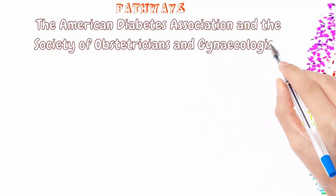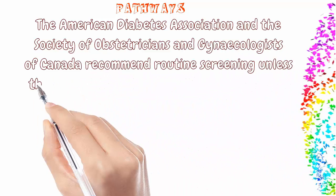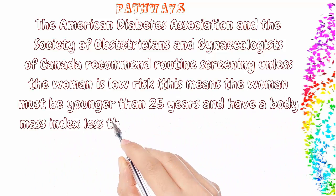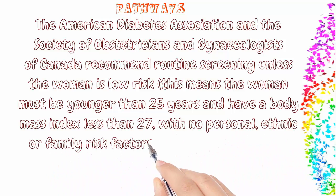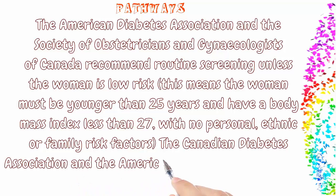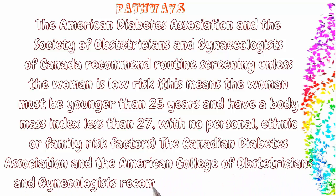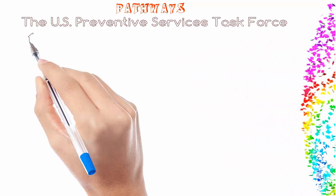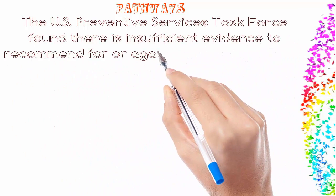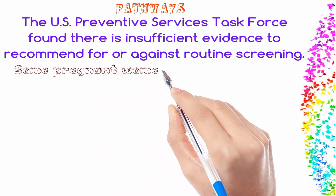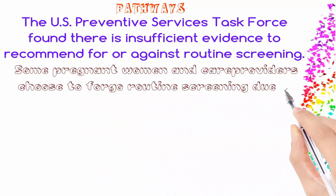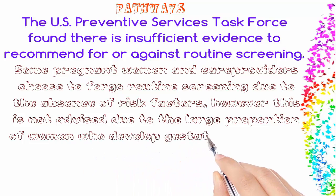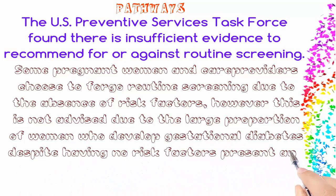The American Diabetes Association and the Society of Obstetricians and Gynecologists of Canada recommend routine screening unless the woman is low risk — meaning she must be younger than 25 years and have a body mass index less than 27, with no personal, ethnic, or family risk factors. The Canadian Diabetes Association and the American College of Obstetricians and Gynecologists recommend universal screening. The US Preventive Services Task Force found there is insufficient evidence to recommend for or against routine screening. Some pregnant women and care providers choose to forgo routine screening due to the absence of risk factors; however, this is not advised.